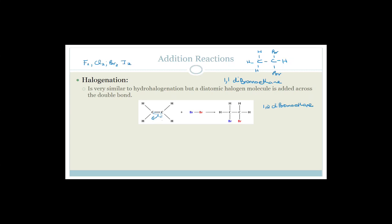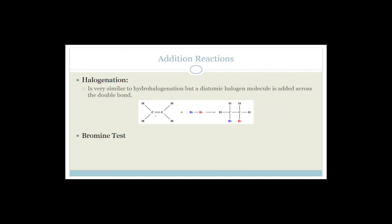The bromine test: bromine is brown in color. When you add bromine to an alkene, the double bond breaks and the bromine atoms attach, so the brown color disappears. Whereas if you add bromine to an alkane — a saturated compound — substitution can occur, but only if you add heat or put it in sunlight. Without heat or UV light, the color stays.